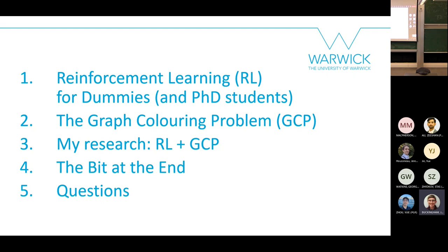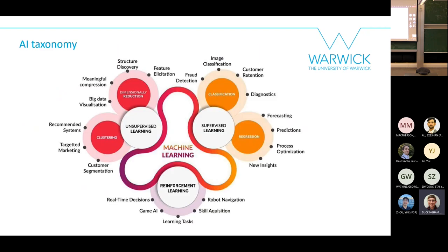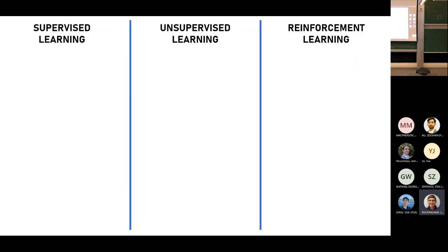Feel free to put your hands up if you want to ask questions as we go through, but there will be an opportunity at the end as well. Reinforcement learning is the first thing I want to talk about. Reinforcement learning is one of the subfields of machine learning — the three main subfields are supervised learning, unsupervised learning, and reinforcement learning.